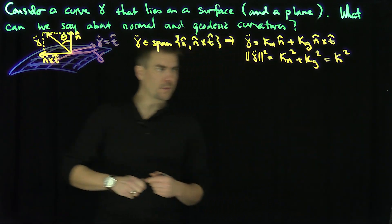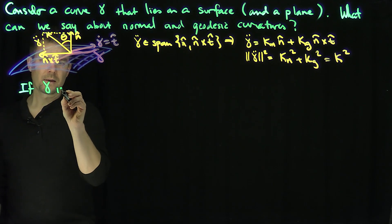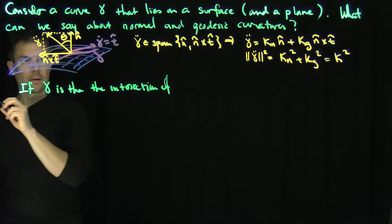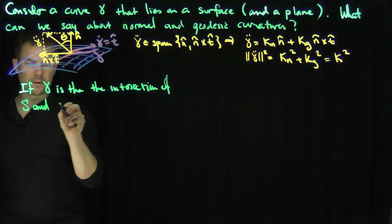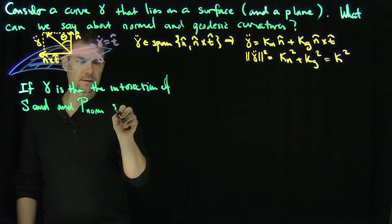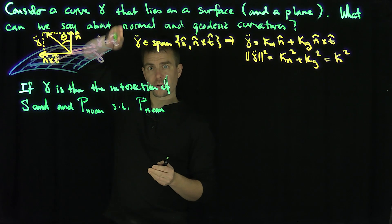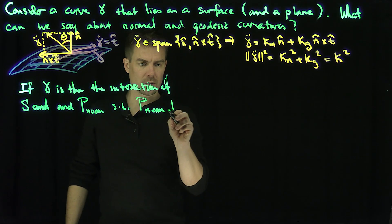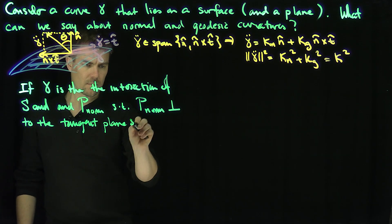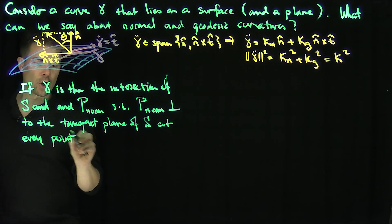So how can we do that? What if we were to consider gamma as the intersection of the surface S and a plane P_norm, such that P_norm is perpendicular to the tangent plane of the surface at every point? These things are called normal sections.